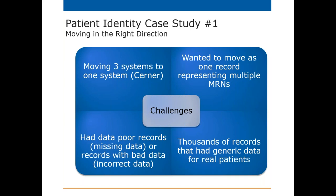There were thousands of records with generic data for real patients — 999s and 111s for social security numbers. Generic names like baby girl, girl, baby boy, and 3,500 records representing eight different naming conventions of the same thing: baby boy as two words, baby boy as one word, baby one, baby two, and so on. It was hard to figure out if there was something useful in that data, and ultimately the decision was made not to move that data over.